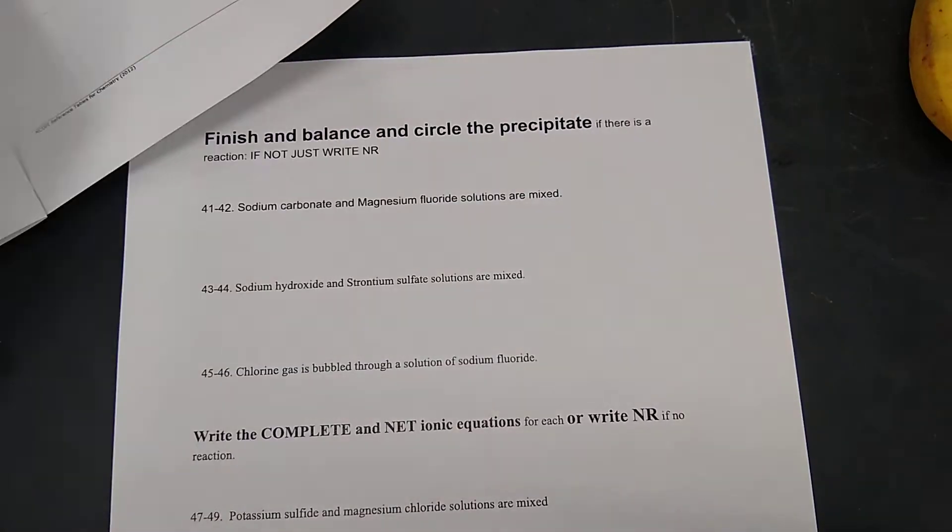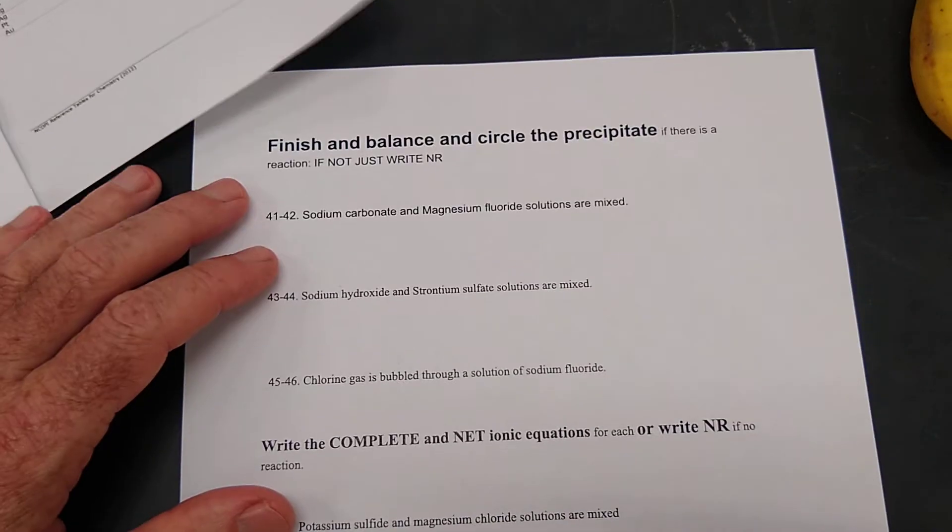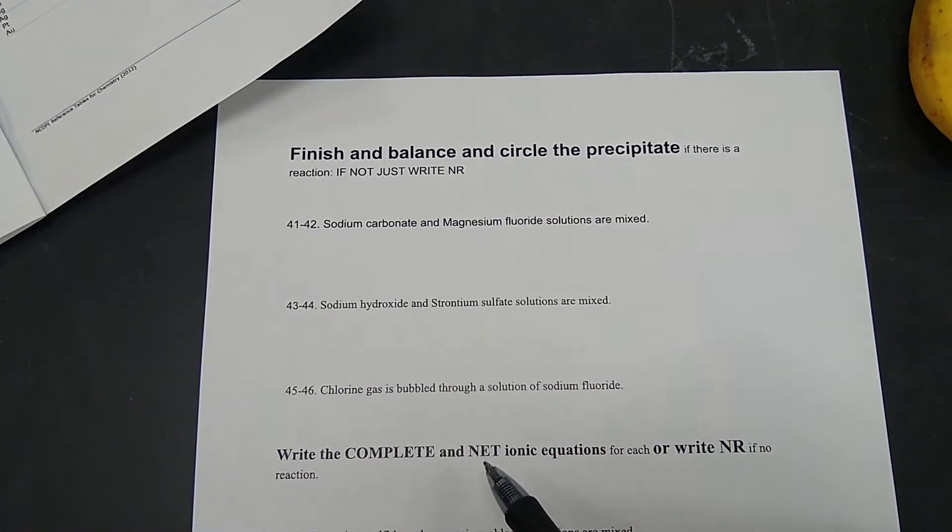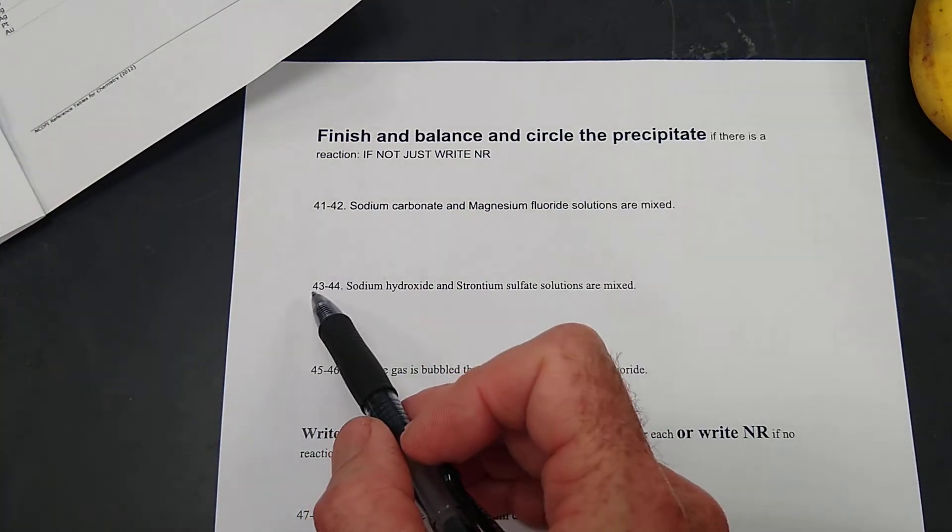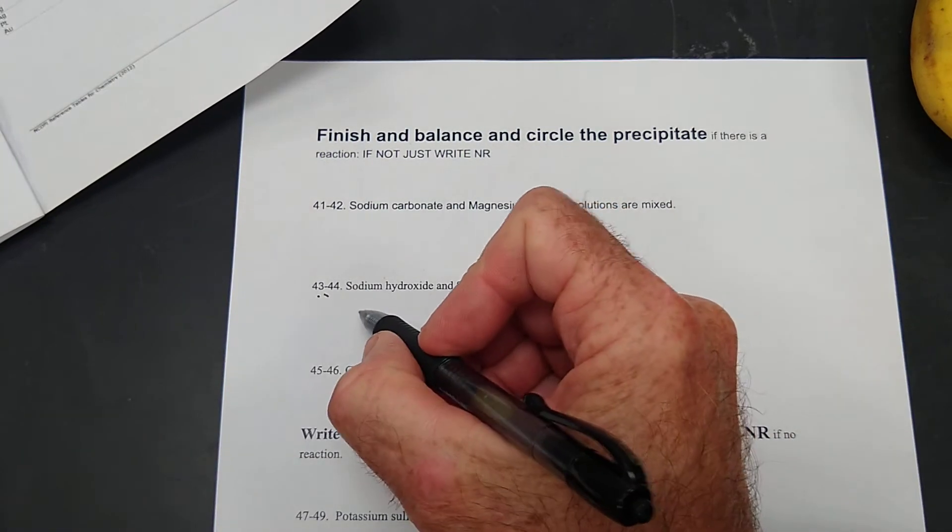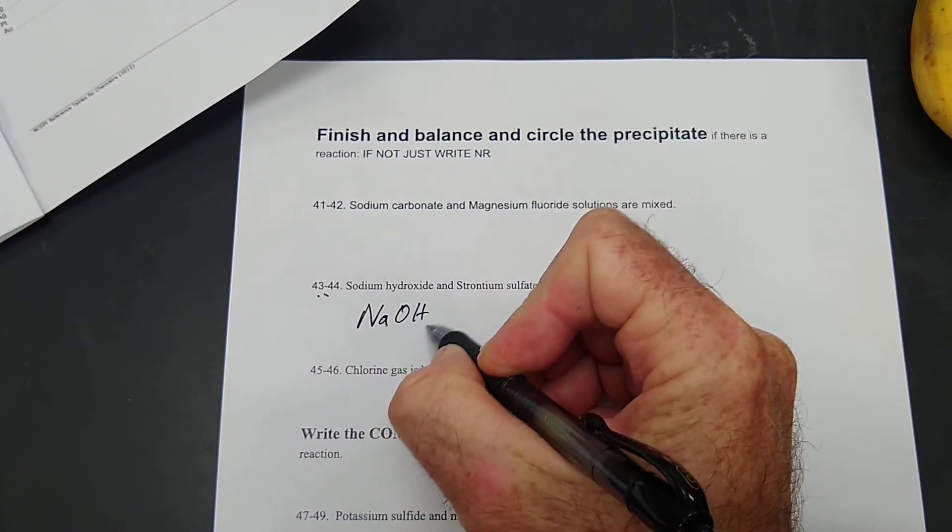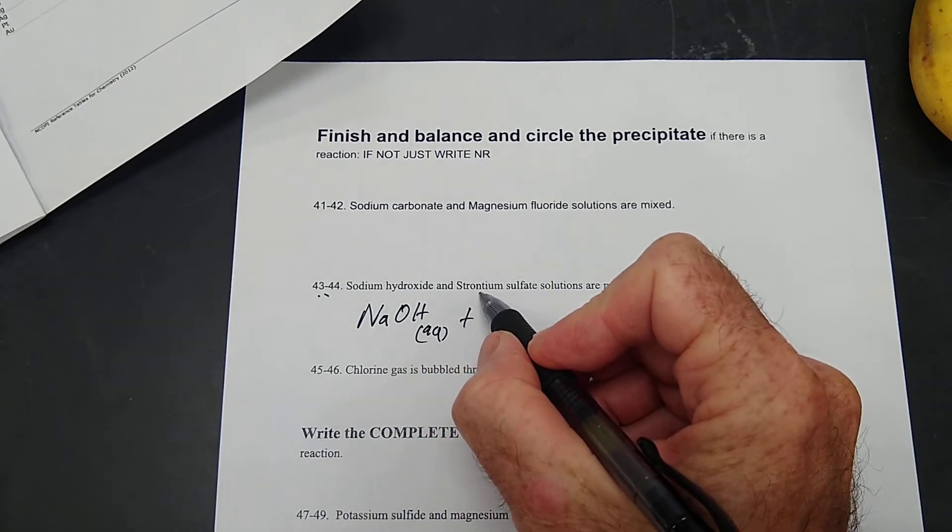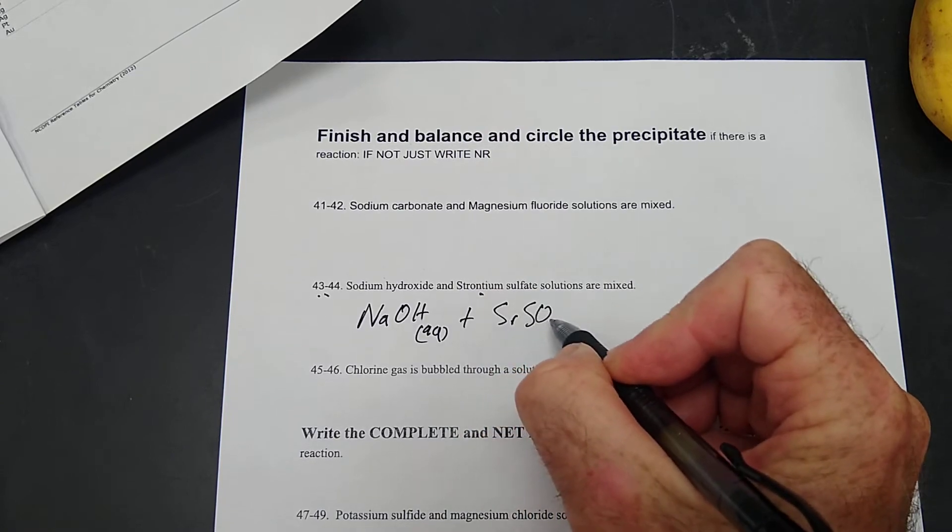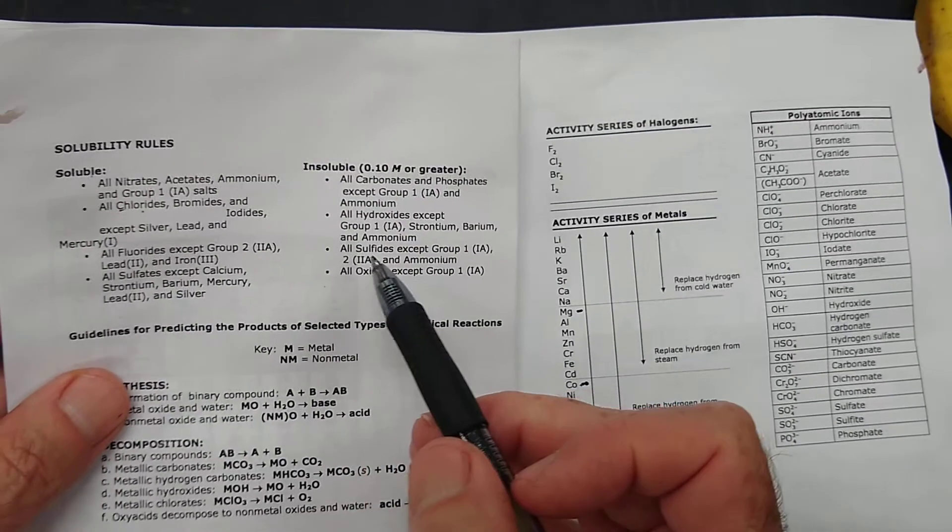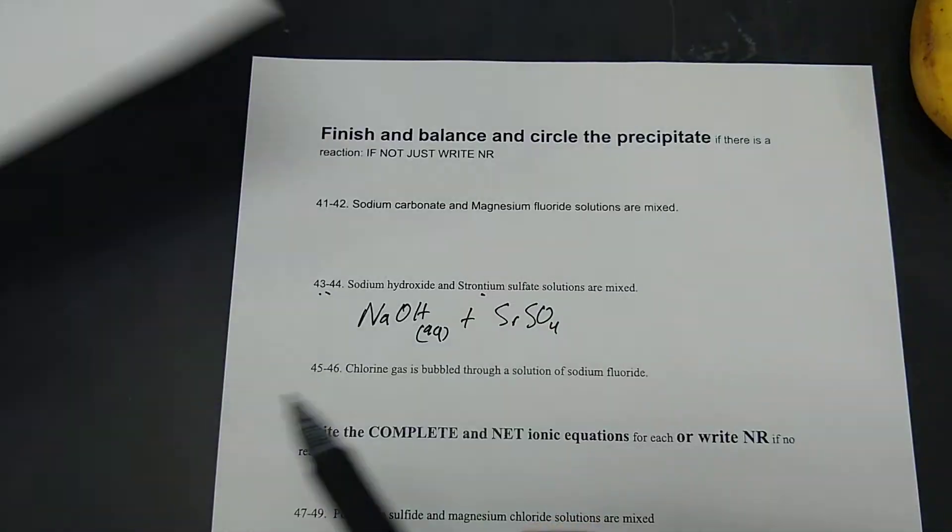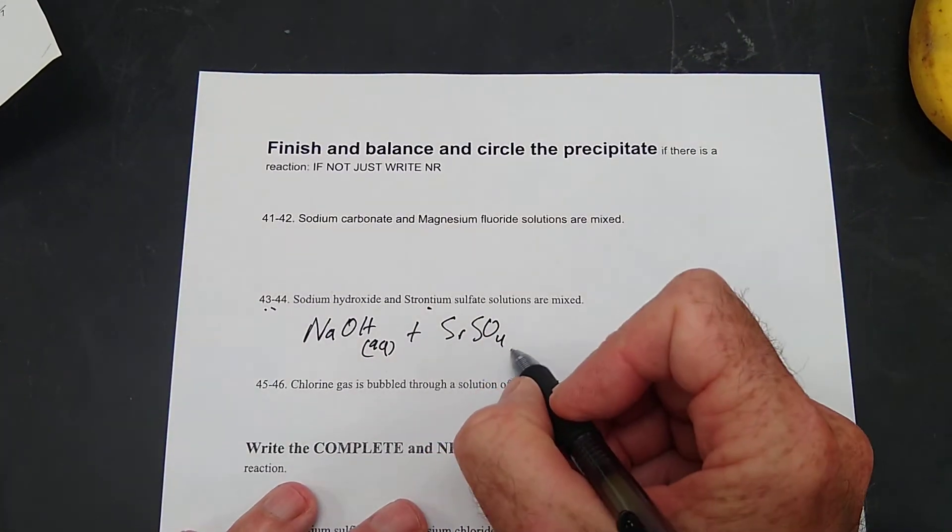Let's skip on finish and balance and circle the precipitate. Let's choose 43 and 44. Sodium hydroxide NaOH aqueous. And strontium sulfate. Strontium is plus two, so that's SrSO4. Let's see if that's aqueous. All sulfates are insoluble except group one and group two. Strontium is in group two, so that's aqueous.